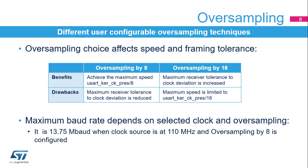The USART receiver implements different user-configurable oversampling techniques for data recovery by discriminating between valid incoming data and noise. This allows a trade-off between maximum communication speed and noise/clock inaccuracy immunity. Select oversampling by 8 to achieve higher speed up to USART KerCK-Pres divided by 8, where USART KerCK-Pres is the USART clock source frequency; however, the maximum receiver tolerance to clock deviation is reduced. Select oversampling by 16 by setting OVER8 to 0 to increase tolerance to clock deviations, limiting maximum speed to USART KerCK-Pres divided by 16. The maximum baud rate achievable is 13.75 Mbaud when the clock source is at 110 MHz and oversampling by 8 is configured.